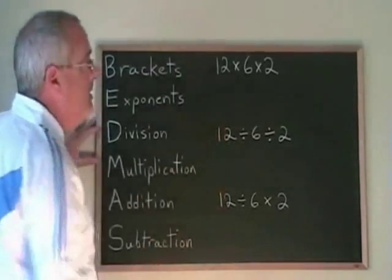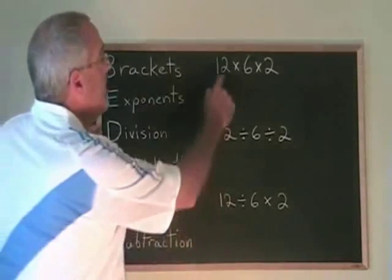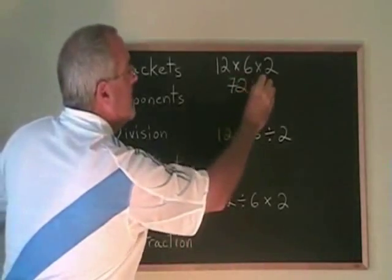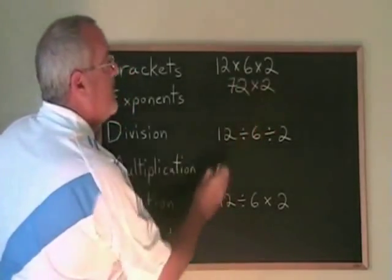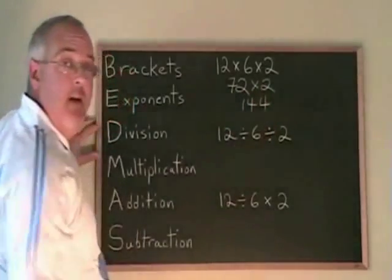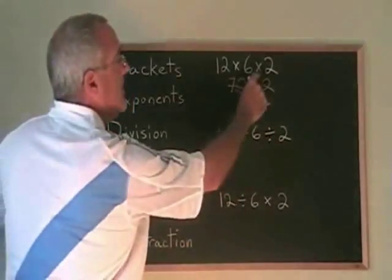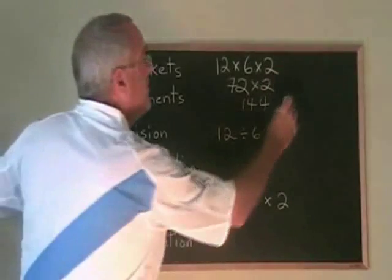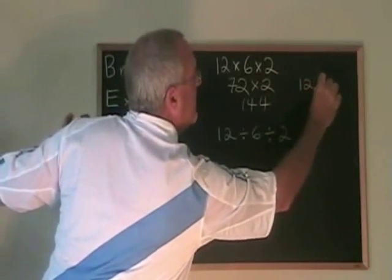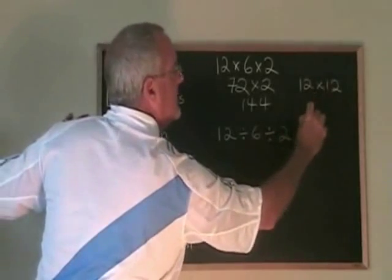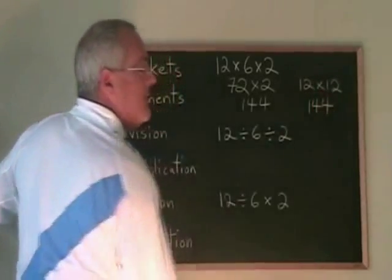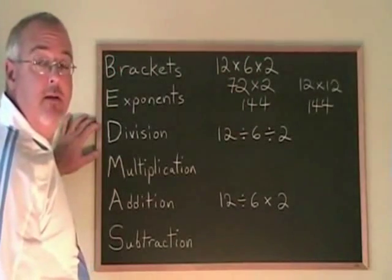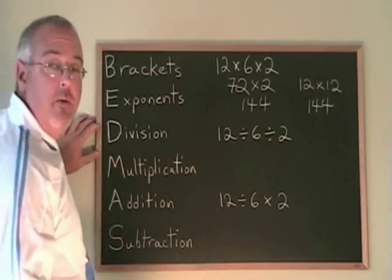Let's look at an example that has only multiplications. 12 times 6 is 72, times 2 gives 144. If we do the second multiplication first, 6 times 2 is 12, and 12 times 12 is still 144. So like with addition, if you have a bunch of multiplication signs and nothing else, it doesn't matter which one you do first.